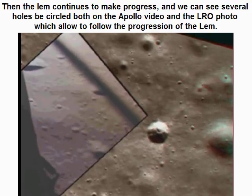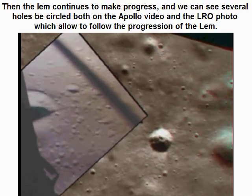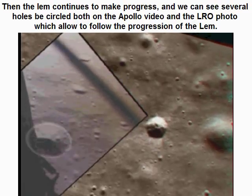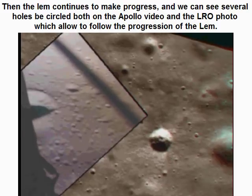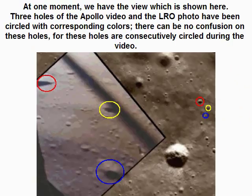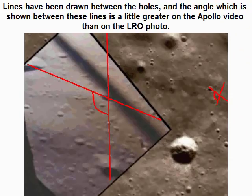The LEM then continues to make progress, and we can see several holes circled both on the Apollo video and the LRO photo, allowing us to follow the progression of the LEM. At one moment we have a specific view where three holes from the Apollo video and the LRO photo have been circled with corresponding colors — there can be no confusion, as these holes are consecutively circled during the video. Lines have been drawn between the holes, and the angle shown between these lines is a little greater on the Apollo video than on the LRO photo.